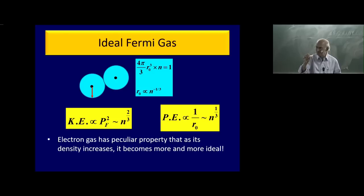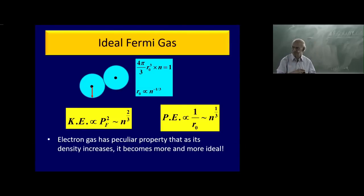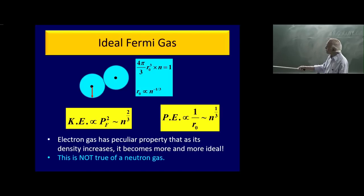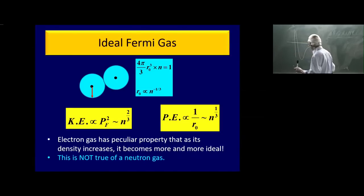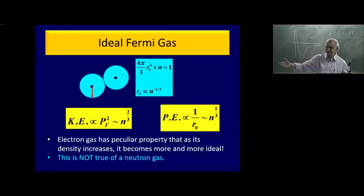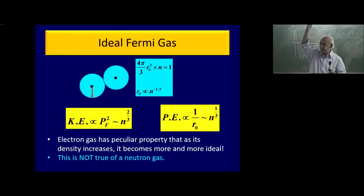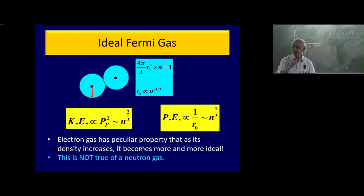That sentence is from Landau and Lifshitz's Statistical Physics. But this is not true of neutron gas. Two neutrons interact not by Coulomb potential but by nuclear potential — something like 1/r¹² — so as the distance between particles gets smaller, the potential energy grows much faster than the kinetic energy. Therefore you cannot use the ideal gas law for neutrons. Oppenheimer told Volkov to use ideal neutron gas because in 1938 they didn't know the shape of this potential well enough.